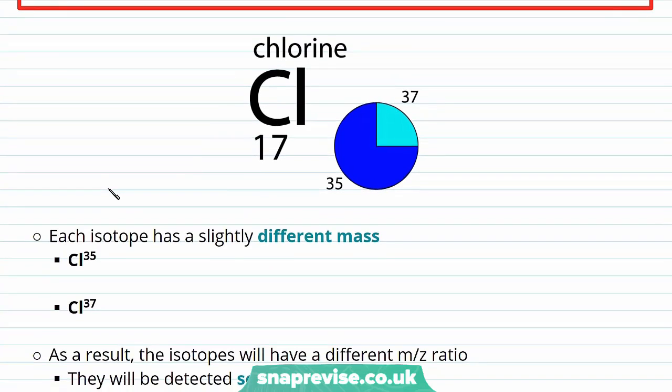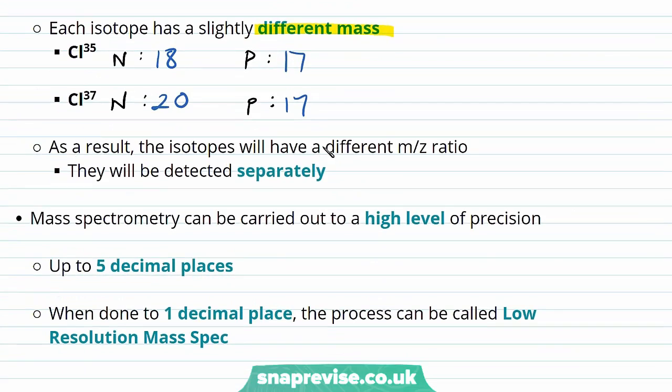Chlorine has two isotopes, chlorine-37 and chlorine-35. Both isotopes have 17 protons but they differ in the number of neutrons. Chlorine-35 has 18 neutrons whereas chlorine-37 has 20. As you can see, the two different isotopes have slightly different masses.